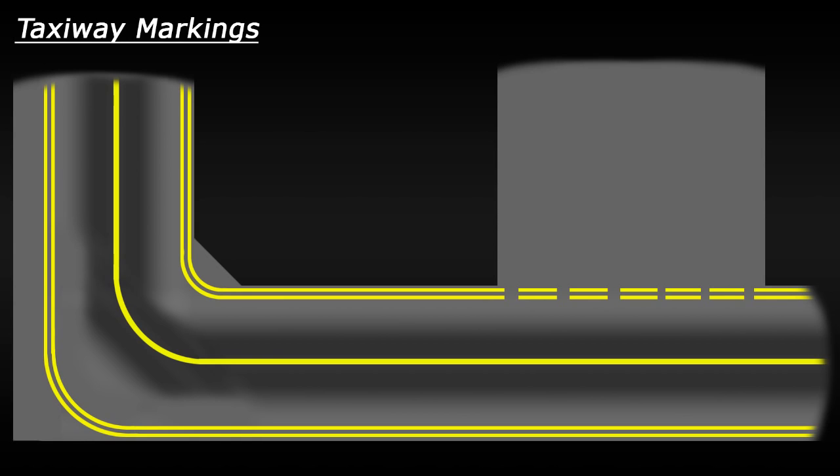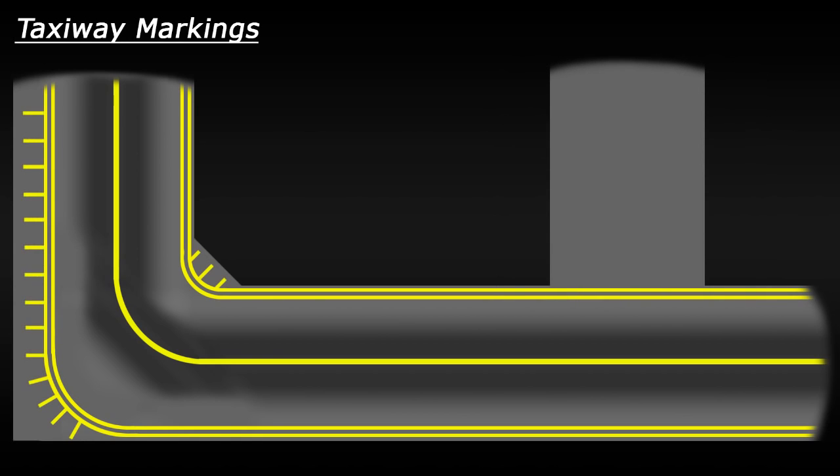Another marking you may see is something called the taxiway shoulder markings. These are short yellow lines which sit at a right angle to the edge, and they are painted outside of the taxiway. These are usually painted on paved areas which cannot take the weight of an aircraft.